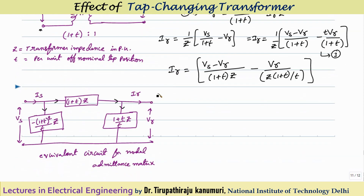The receiving end current is the sum of two currents. The current from the sending end flows up to a node, where it divides: some goes down through the shunt branch and the remainder reaches the receiving end. The series current is the voltage difference (Vs − Vr) divided by the equivalent series impedance (1+T)×Z. The current going through the shunt branch is Vr divided by the shunt impedance Z×(1+T)/T.